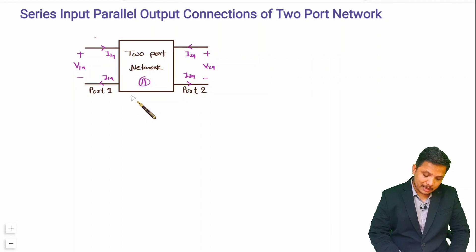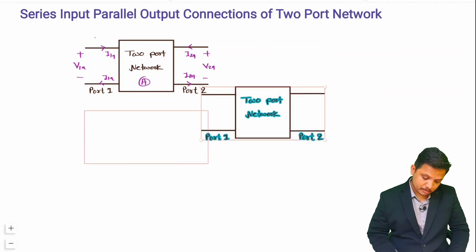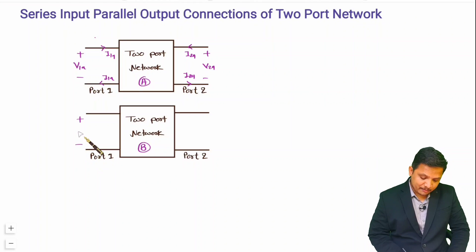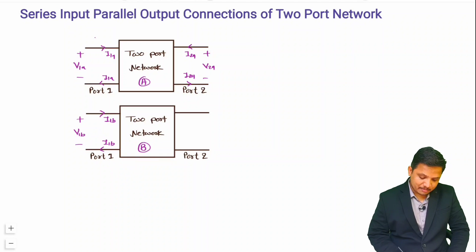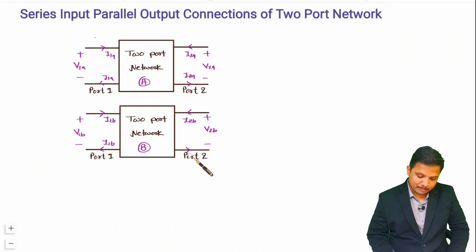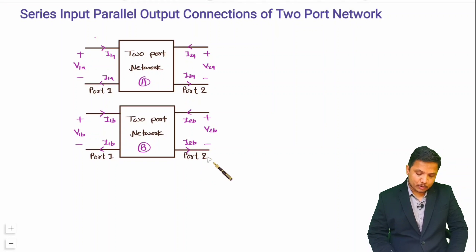Now I'll draw the second two-port network. This is two-port network B. At port 1, the voltage is V1B, the current going inside is I1B, and the current coming out is I1B. At port 2, the voltage is V2B and the current going inside is I2B.